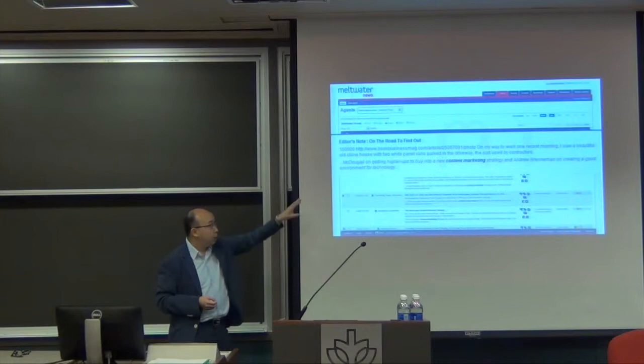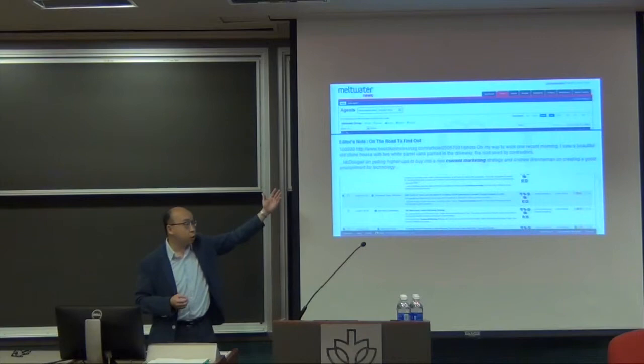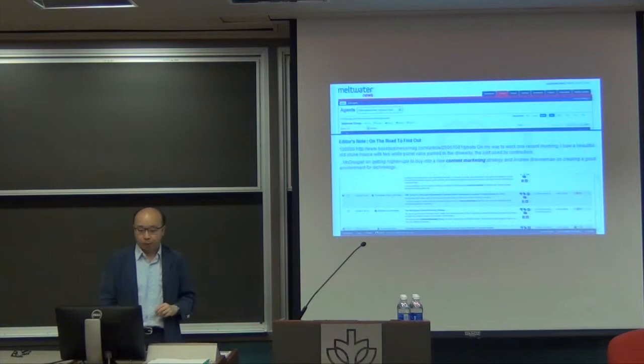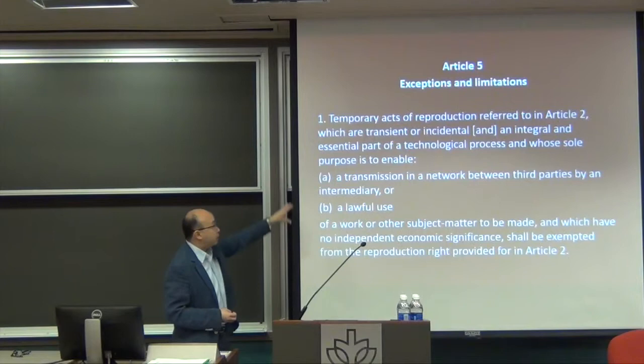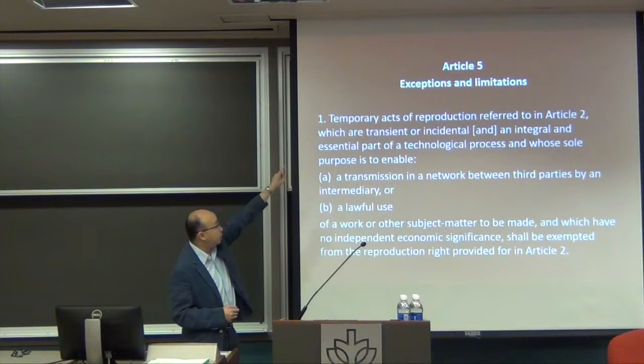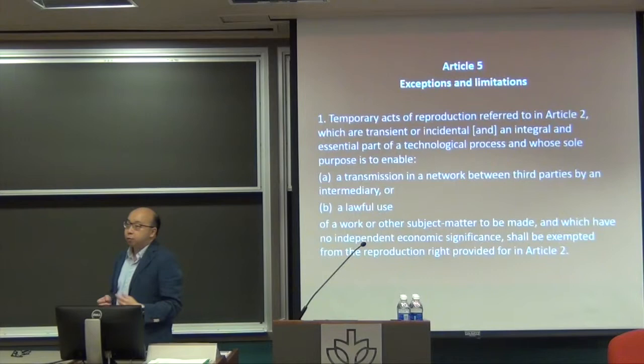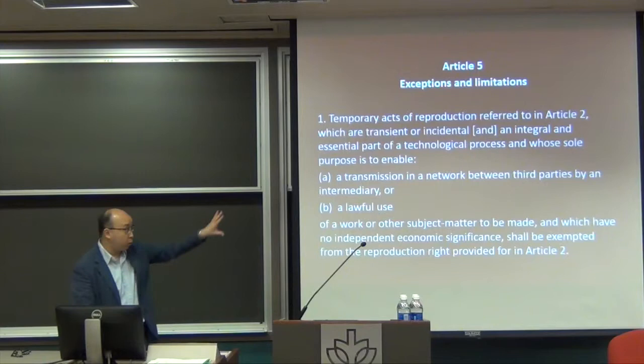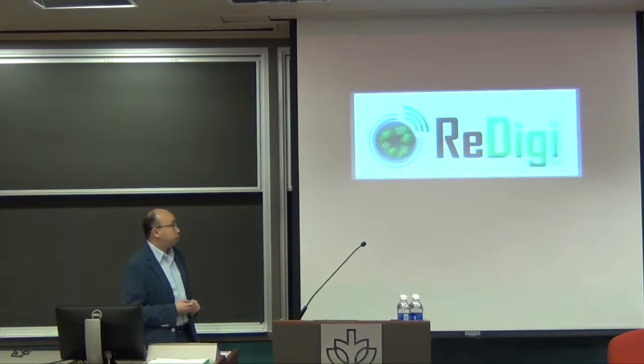The newspapers decided to sue the company for putting together these synopses and excerpts. The claim was that having a cached copy would be covered within the copyright statute. When the case went to the Court of Justice, they decided it was actually covered within the Article 5(1) exception — it would not be infringing because these were temporary acts of reproduction. That brings back some of the earlier discussion about temporary copies from the white paper, the WIPO Copyright Treaty, and the Information Society Directive.